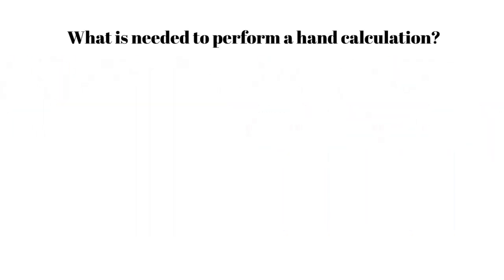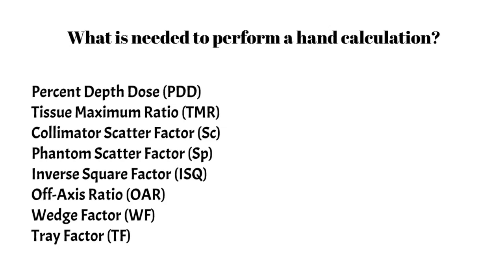But what kinds of data do we actually need to perform one of these calculations? I mentioned a few already, but often many factors go into the calculation, such as the percent depth dose, tissue maximum ratio, the collimator and phantom scatter factors. You might need an inverse square factor or an off-axis ratio, a wedge factor, a tray factor. These are the main components that go into a hand calculation, and I will cover these in detail in subsequent videos.